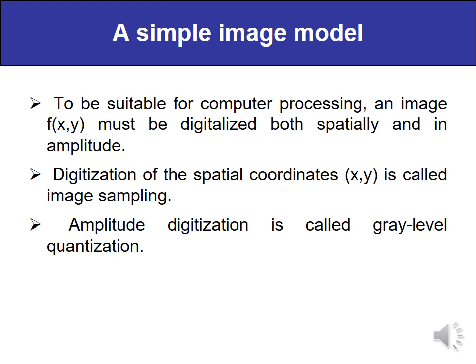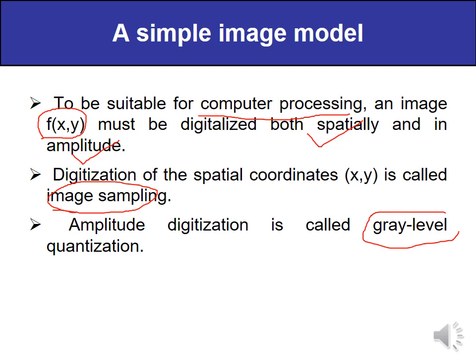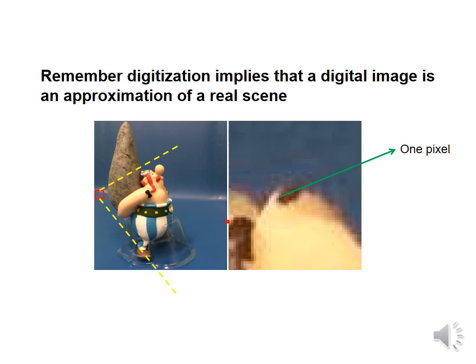A simple image model: an image must be compatible for computer processing — this is the first and foremost requirement. The image represented by f(x, y) in two dimensions must be digitized both in the spatial domain and in the amplitude domain. Digitization in the spatial domain is known as image sampling, while digitization in amplitude is known as grey level quantization. A digital image is therefore an approximation of a real scene.